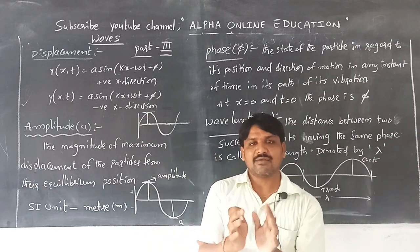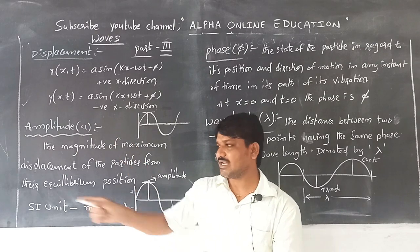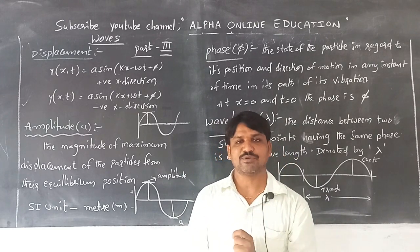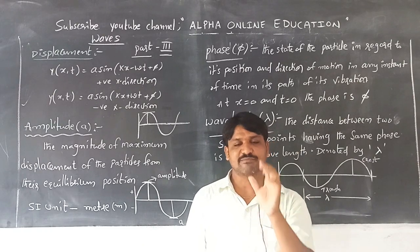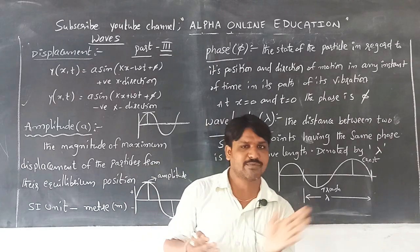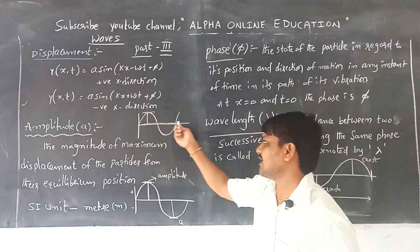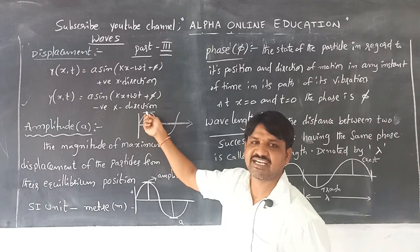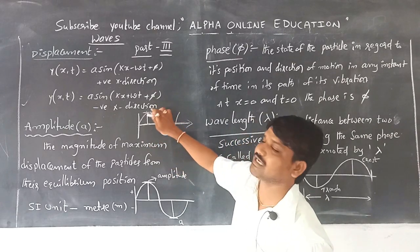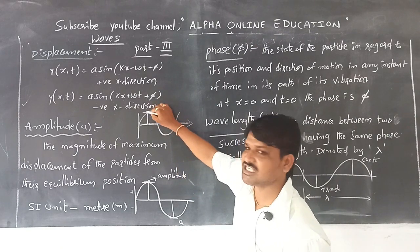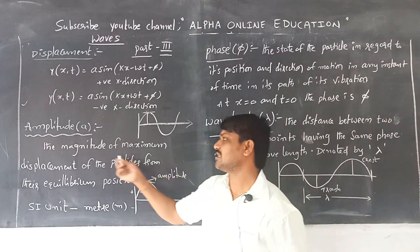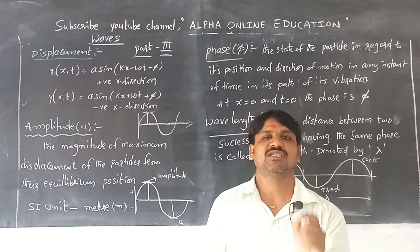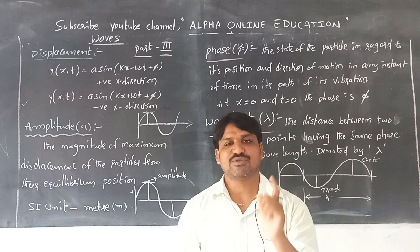The first parameter involved when the wave is travelling is amplitude. Amplitude means the magnitude of the maximum displacement of the vibrating particles from their equilibrium position. This is the maximum displacement of the vibrating particles from the equilibrium position. It is measured in meters or centimeters and is denoted with a small 'a'.